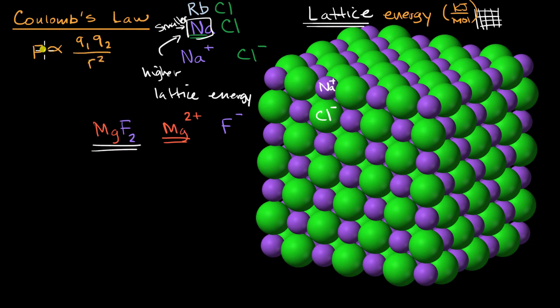So in magnesium fluoride, the Coulomb forces between the ions and the lattice are even stronger. And so the lattice energy, the energy necessary to pull it apart, is going to be higher. So out of the three we just looked at, the highest lattice energy is going to be magnesium fluoride followed by sodium chloride, followed by rubidium chloride.